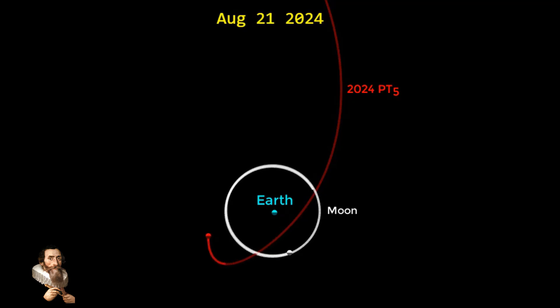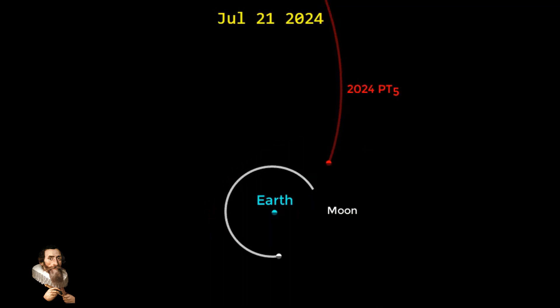This isn't the first time that Earth has experienced a mini-moon event. Similar occurrences have been recorded in the past, such as the capture of asteroid 2022 NX1 in 1981 and again in the year 2022. These events, while rare, are not unprecedented and contribute to our understanding of the complex gravitational dance that exists between planet Earth and nearby asteroids.